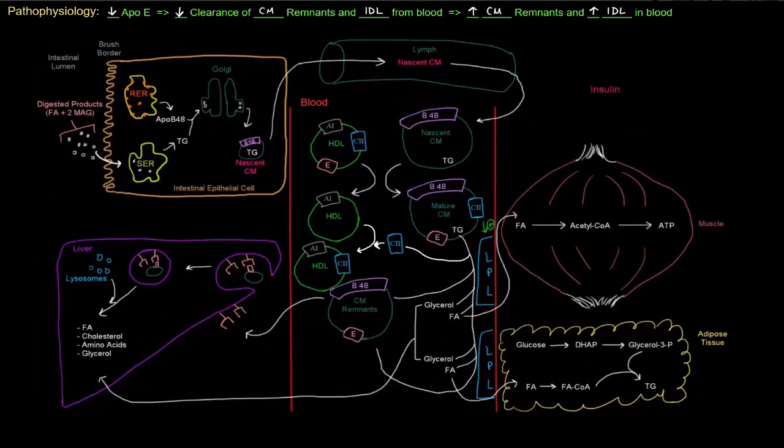The chylomicron remnants - after the mature chylomicron has the triglycerides cleaved into fatty acids and glycerol, we have the chylomicron remnants with the apoprotein E that it needs to use to bind the ApoE receptor and subsequently be taken up into the liver.